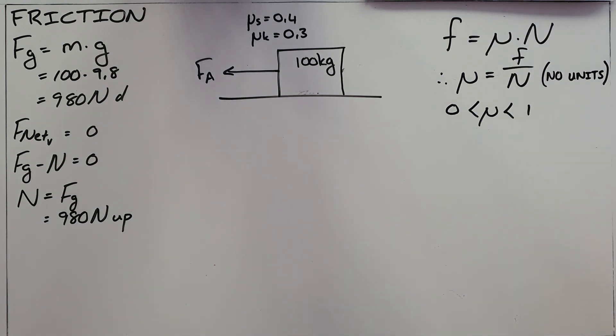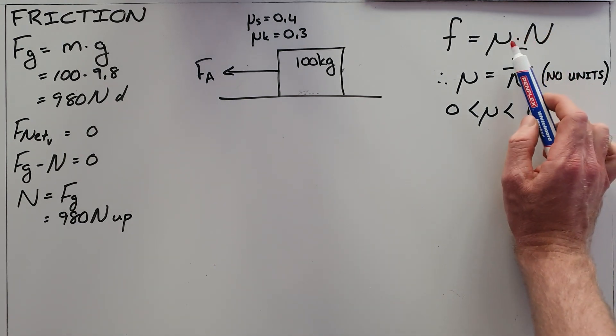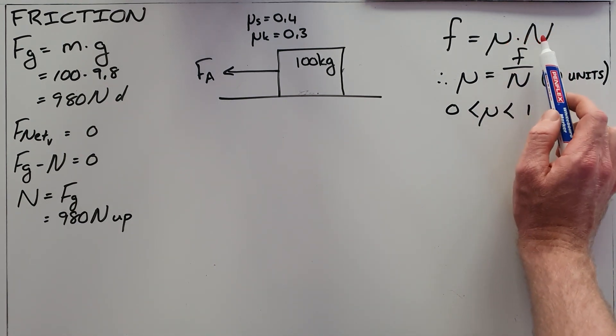The friction is calculated by taking the product of the coefficient of friction and the normal force.